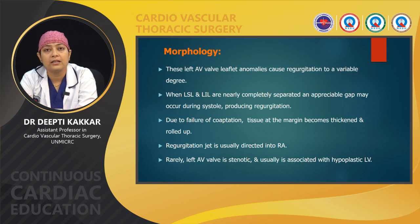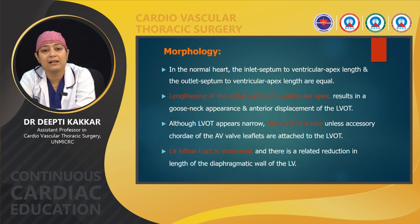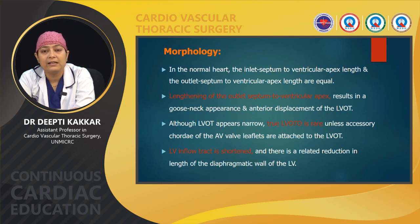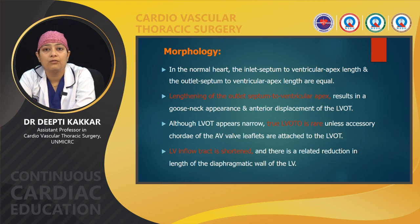In the normal heart, the inlet septum to the ventricular apex ratio is almost equal. The lengthening of the outlet septum to the ventricular apex results in a gooseneck deformity with anterior displacement of the LV outflow tract. Although the outflow tract appears narrow, true LVOT obstruction is rare unless there are accessory chordae attached to the AV valve leaflets inserting into the LVOT. The LV inflow tract is also shortened and there is relative reduction in the length of the diaphragmatic wall of the LV.